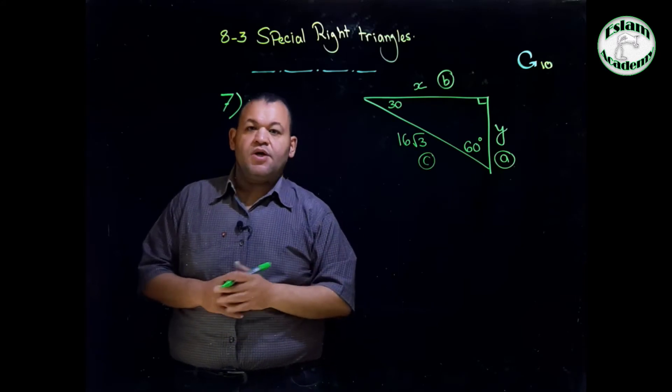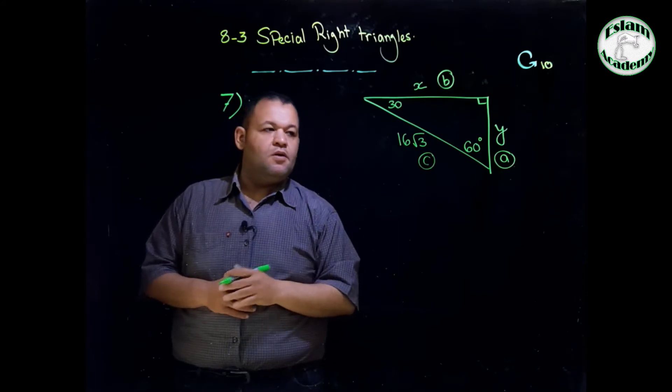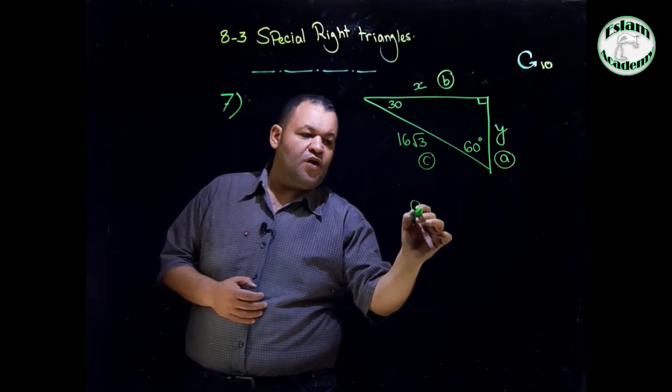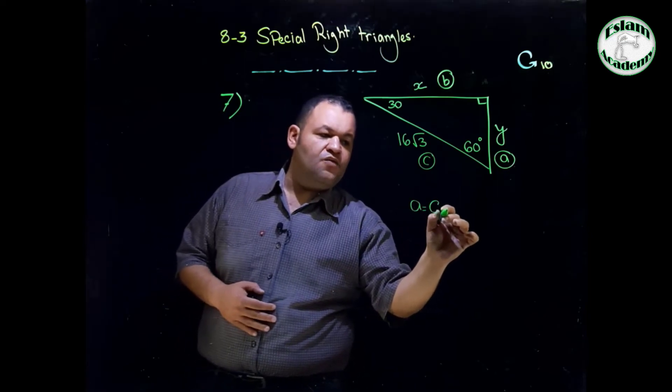To start solving the 30-60 triangle, we need to find the value of A. The given is C. So the relation to find A is C divided by 2.